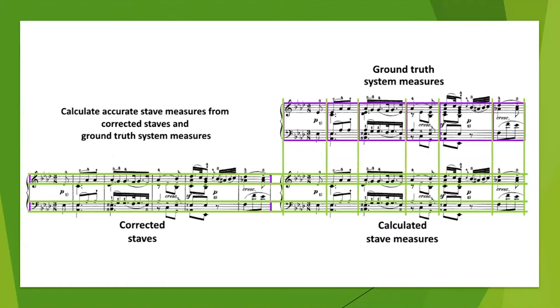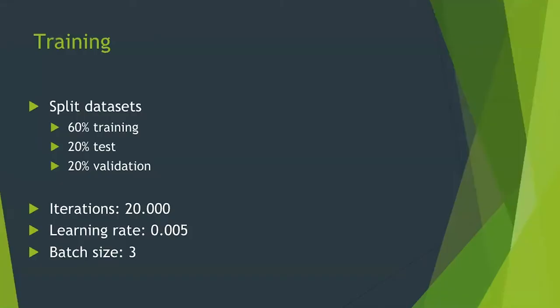I manually corrected all staff measures for all pages. Then I used the ground truth system measures, took all the bars, and combined them together to get calculated staff measures. That's how I enhanced the dataset, and now the dataset has all three categories. So we have a typeset and a handwritten dataset.